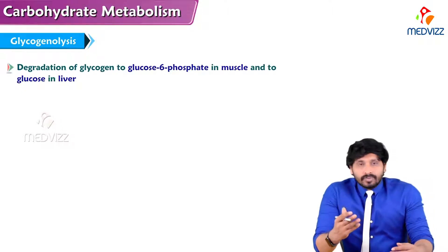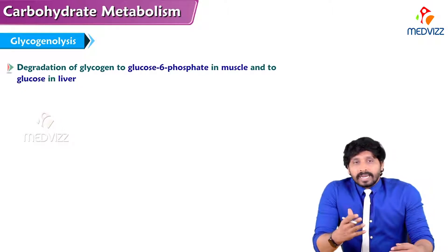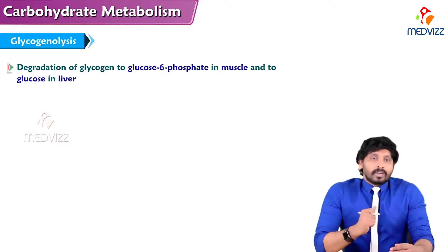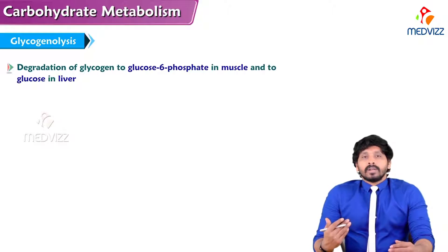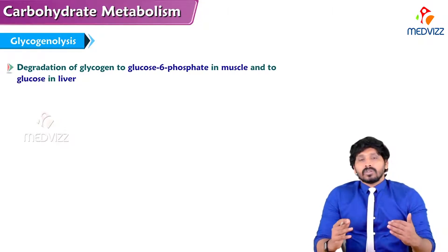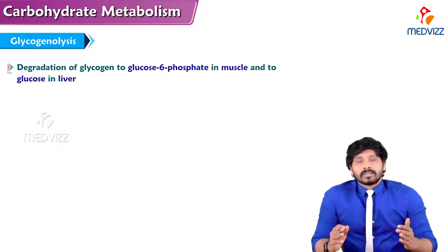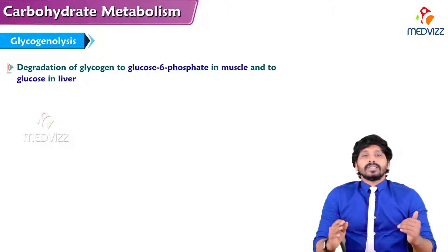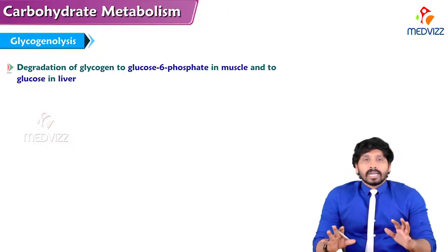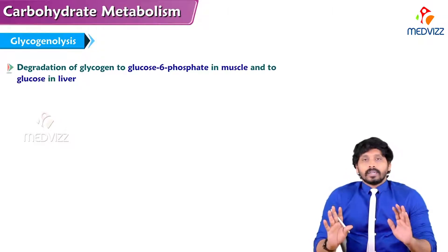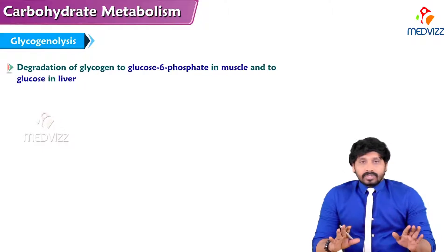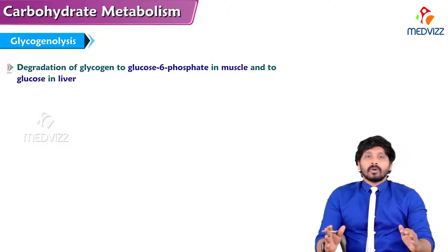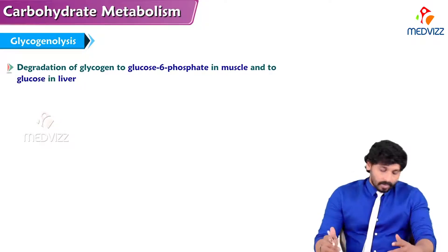Which conditions require glycogen breakdown? When we need energy — when we are under starvation, when we are in shortage of glucose concentration in circulation — in that condition, the stored form of glycogen has to undergo degradation. That degraded glycogen will form free glucose, which will be sent to circulation and from there to different parts of the body based on their need.